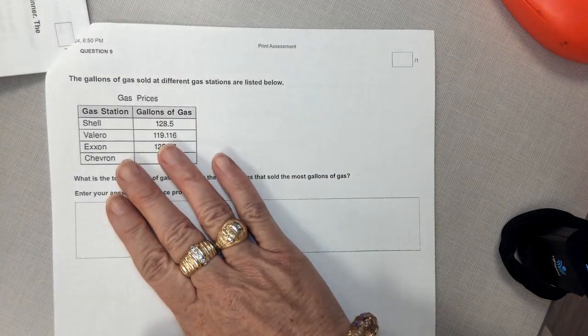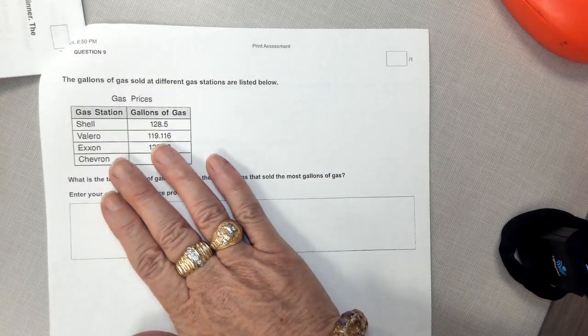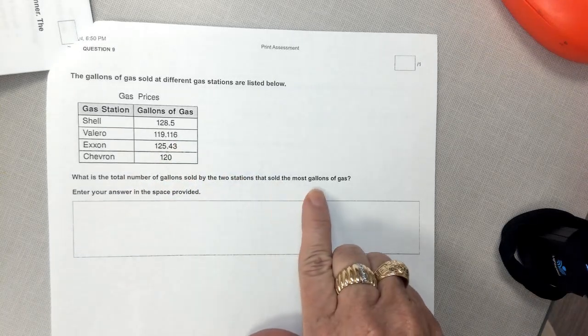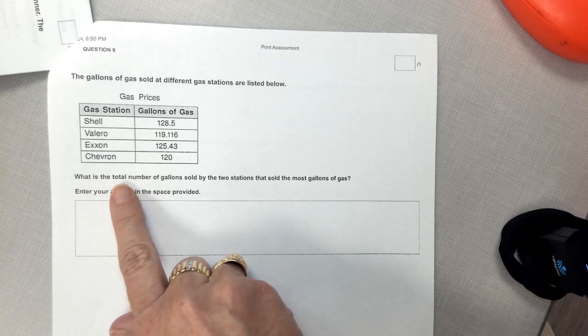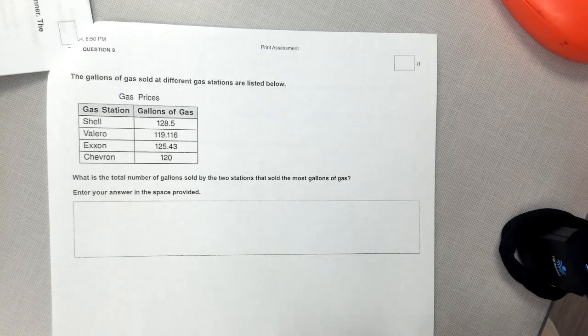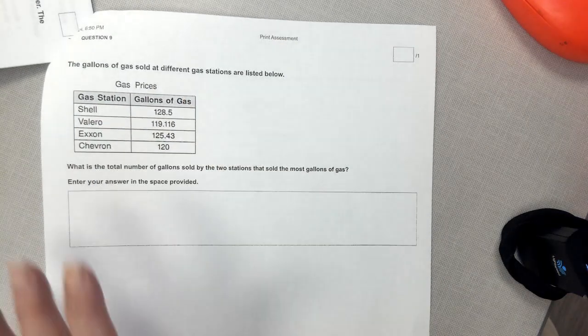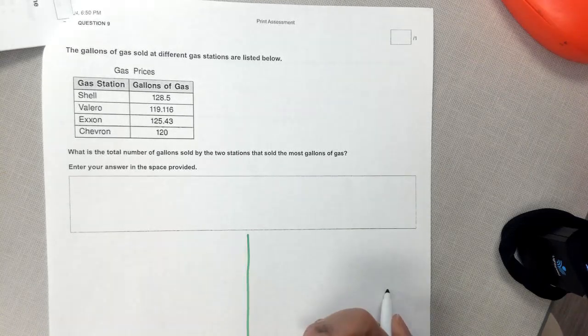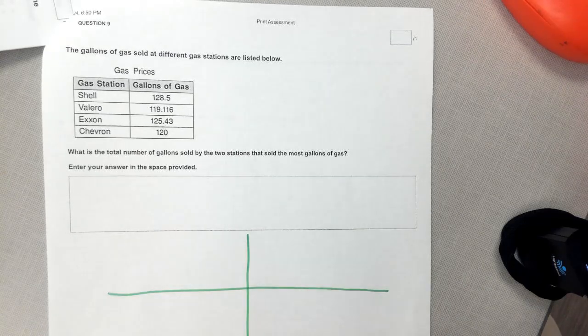So here we have basically a layering problem, boys and girls, where we are expected to figure out the two gas stations that sold the most, and then we want to find the total. So since we have a lot of information going on here, we're going to use a windowpane to kind of organize us, and that way we don't get caught up in leaving out any steps.